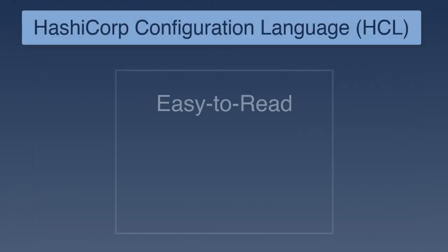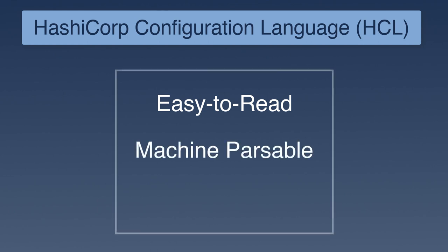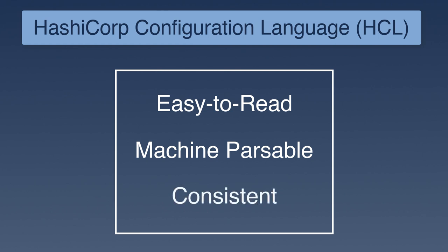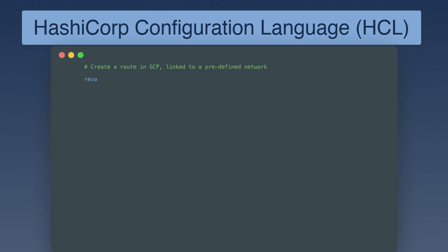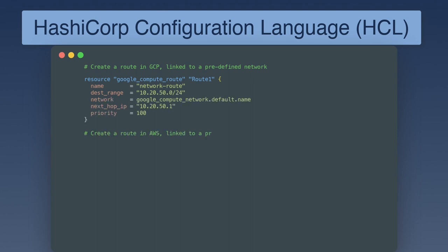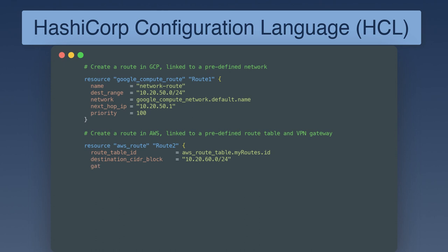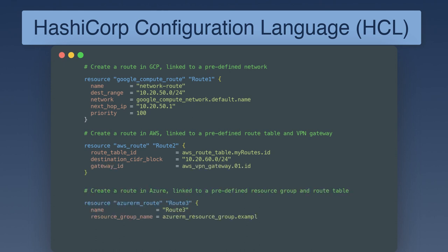Terraform offers a single, easy-to-read, machine-parsable language called HashiCorp Configuration Language, or HCL, which is consistent no matter which technology you are interacting with. In this example, we use HCL to create a subnet across three cloud environments. HCL does not try to abstract away from the service model of each cloud and doesn't force you down the path of the lowest common denominator when interacting with cloud resources. The outcome is that operators don't need to learn how to interact with each API separately and can spend time provisioning infrastructure. Team members have a single view of the subnet creation that is easy to read and understand.